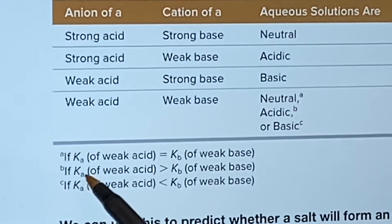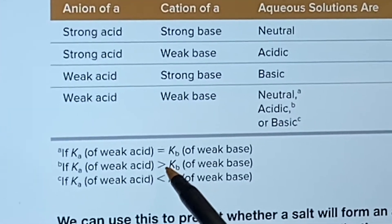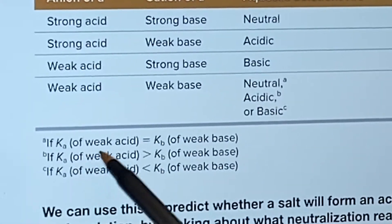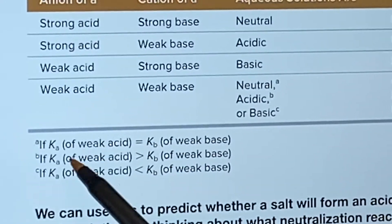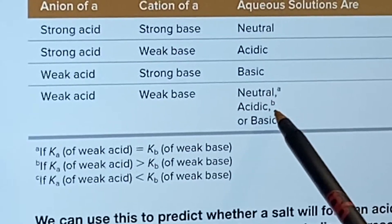What about the situation where the Ka of the weak acid is bigger than the Kb of a weak base? It's going to be acidic because the acid one was stronger. It wasn't strong like this was strong, but it is stronger than the base. It's going to rule it and it'll be acidic.